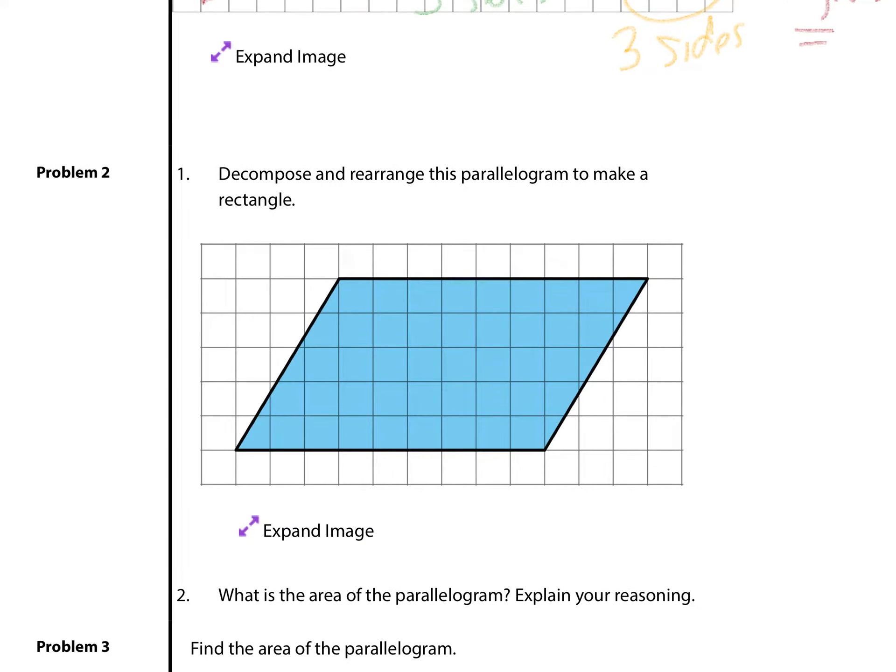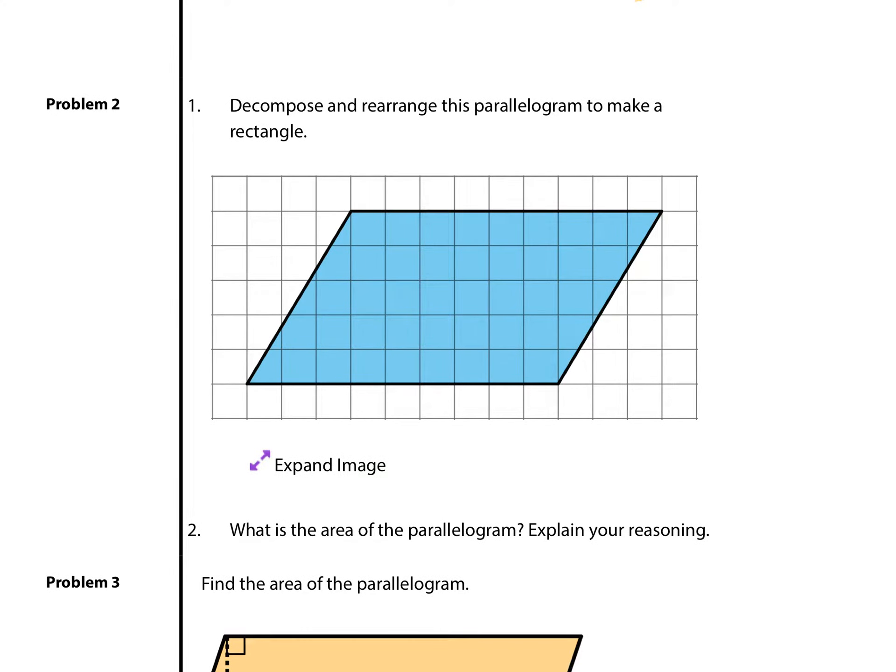In question two, decompose and rearrange this parallelogram to make a rectangle. Didn't ask us to find the area. Just to decompose. So if I draw a line down here, this is a triangle that I'm going to take and move. Where can I take and move that? How about over there? So now I have a really nice rectangle.